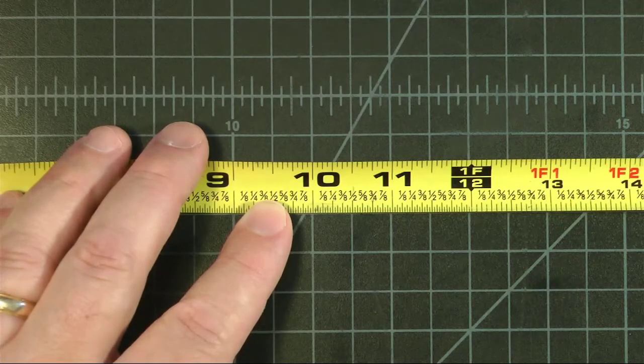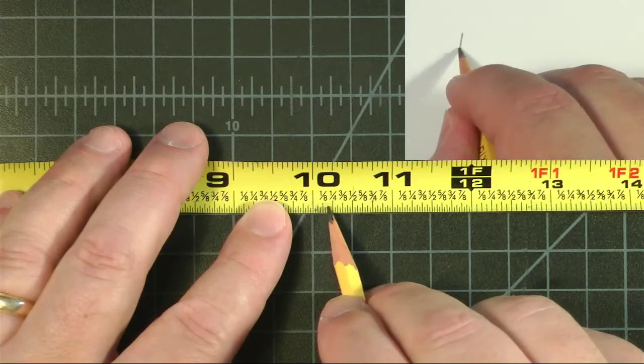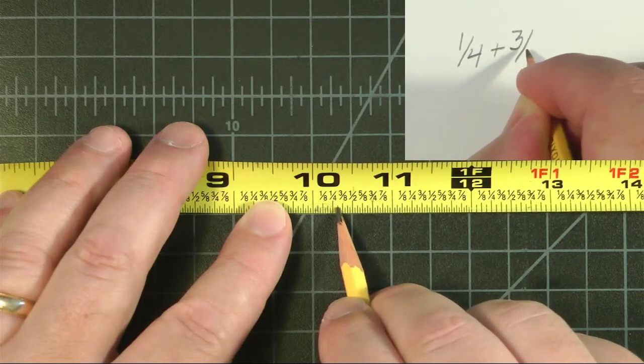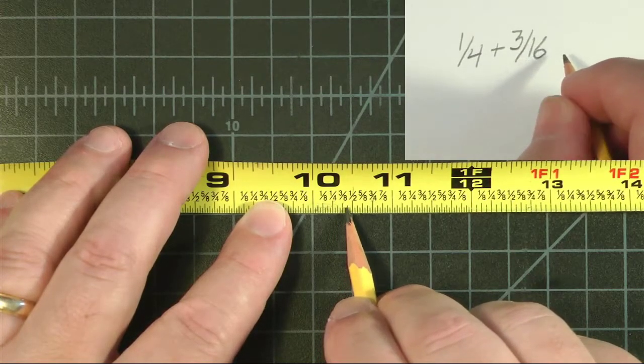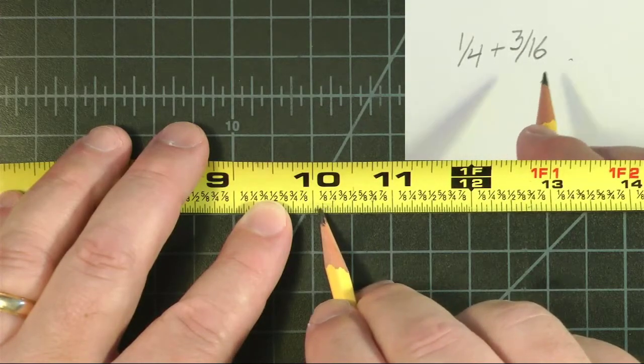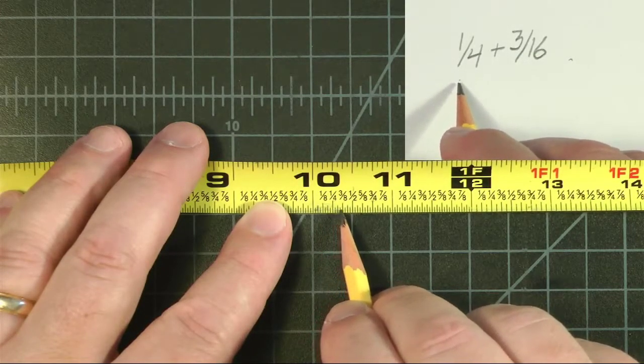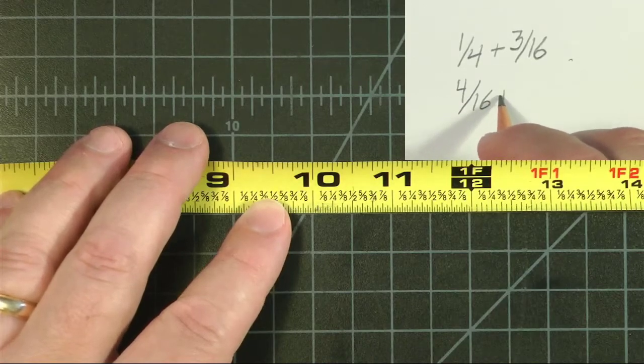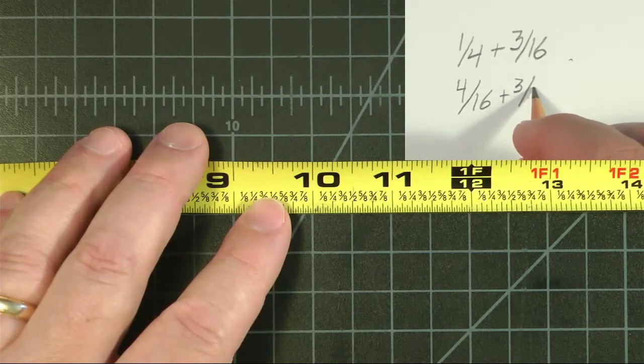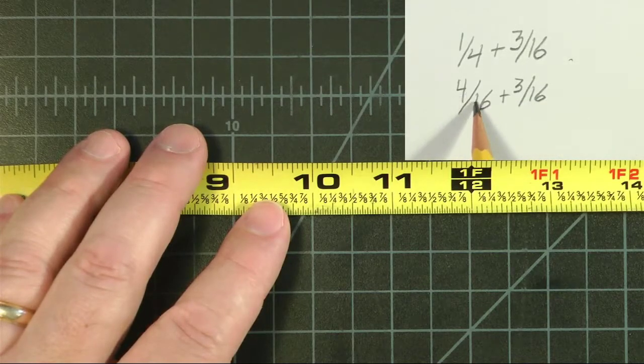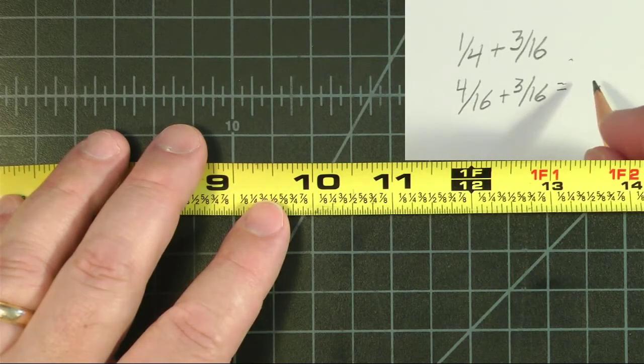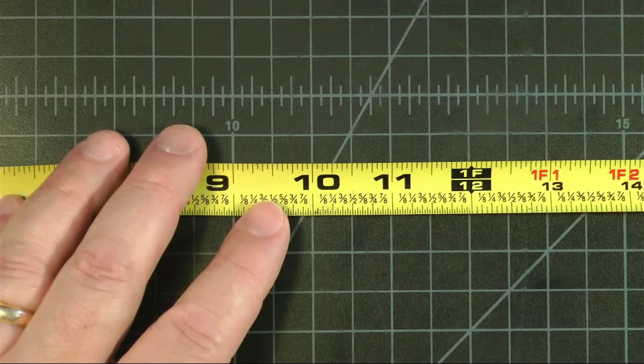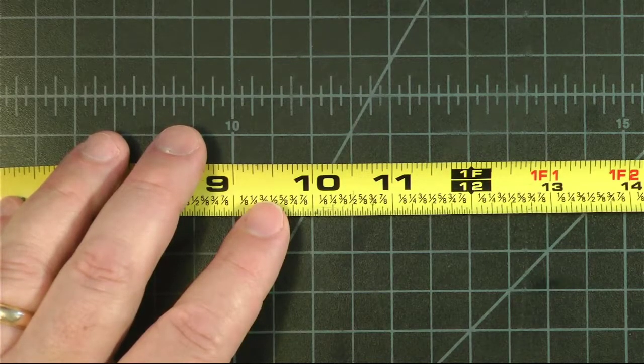Let's try a quarter plus 3/16. Here we have a quarter. There's a sixteenth, there's a sixteenth, and there's a sixteenth. So 1, 2, 3, 4, 5, 6, 7/16. Well, if we do it in the math method, we're going to increase our quarter inch. Let's see, it's 2/8, that's not enough. 4/16. So 3/16 plus 4/16 equals 7/16.